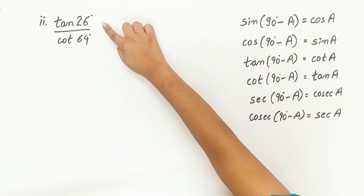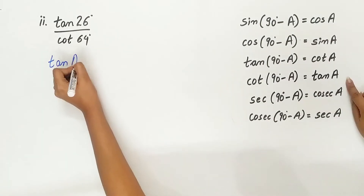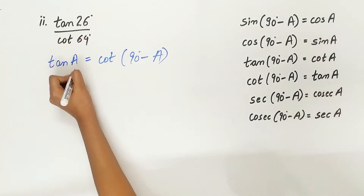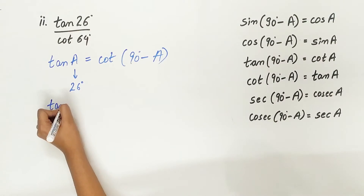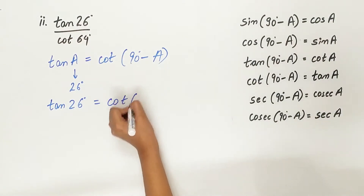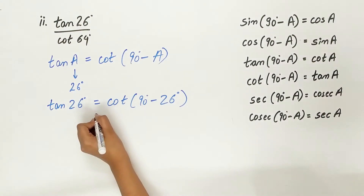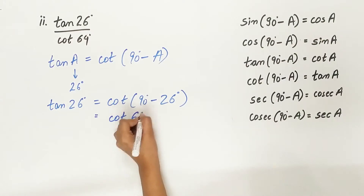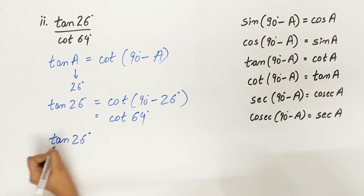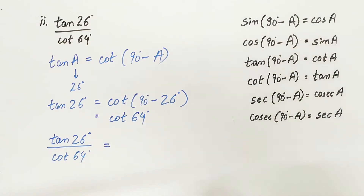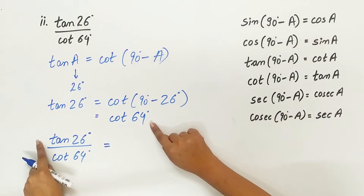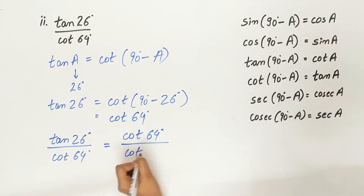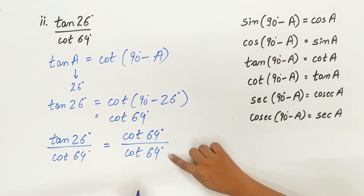Second part is tan 26 degree divided by cos 64 degree. We know tan A is equal to cos 90 degree minus A. A is 26 degree, so tan 26 degree is equal to cos 90 degree minus 26 degree, which is cos 64 degree. So we can write cos 64 degree in place of tan 26 degree. Cos 64 degree divided by cos 64 degree is 1.